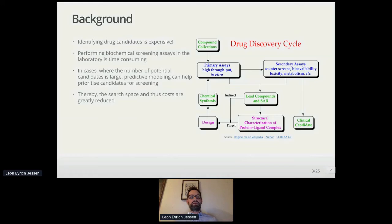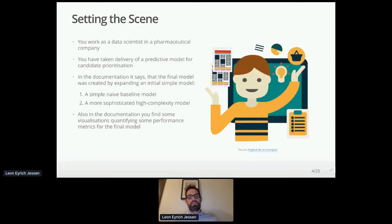So let's set the scene. You're working as a data scientist in a pharmaceutical company and you've taken delivery of a predictive model for candidate prioritization in the wet lab environment. You find in the documentation that the final model was created by expanding a simple model. You start with a simple naive baseline model, and from that a more sophisticated high complexity model has been created.